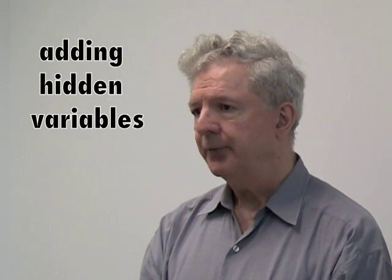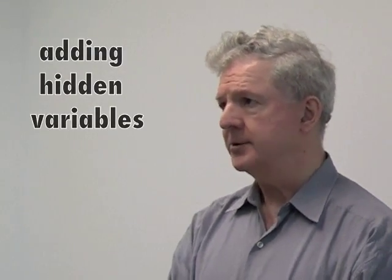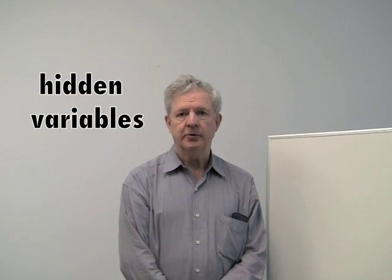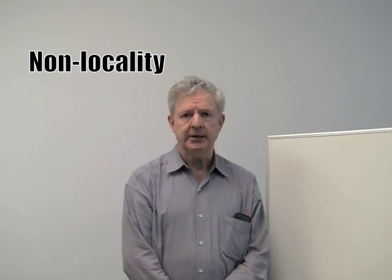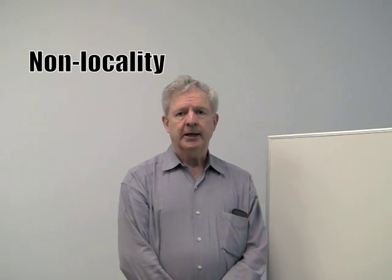He attempted to fix quantum mechanics and fix some of the weirdness by adding hidden variables. No such hidden variables could remove the uncertainty or, as we think of it today, the non-locality. And that was the resolution of those debates at the time.